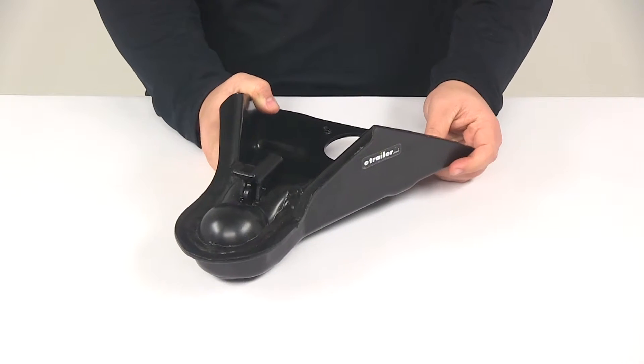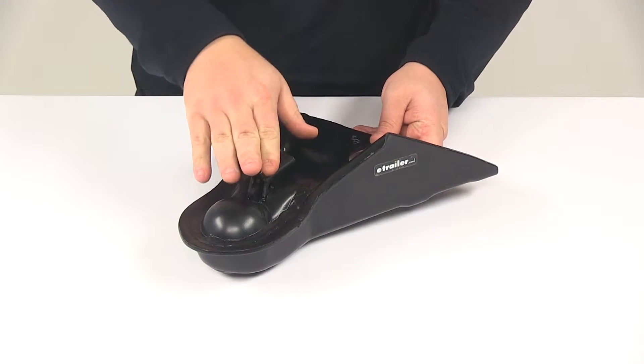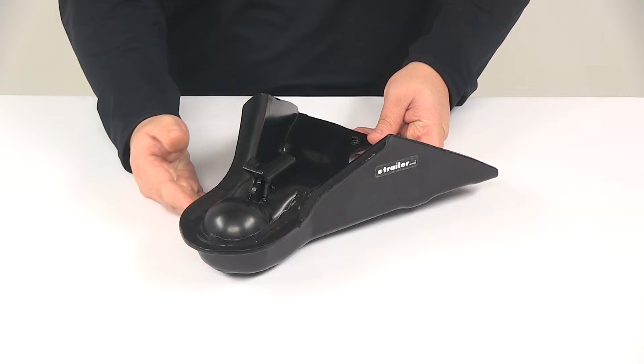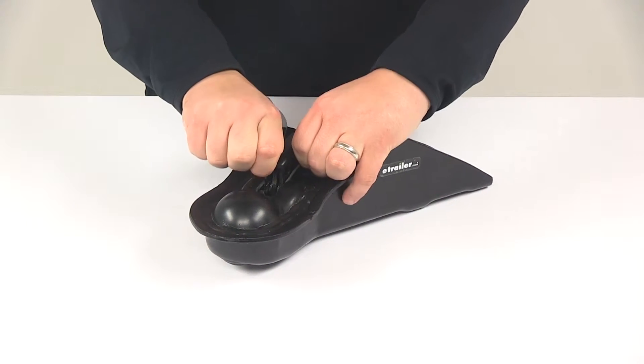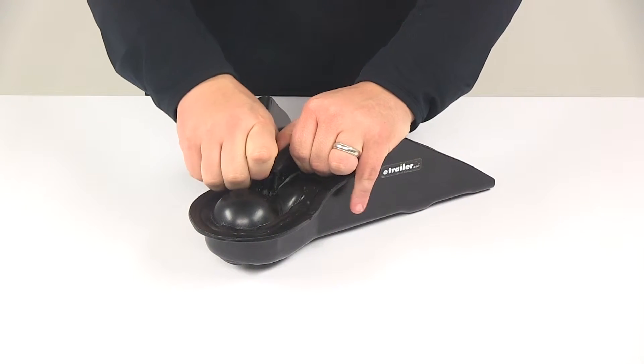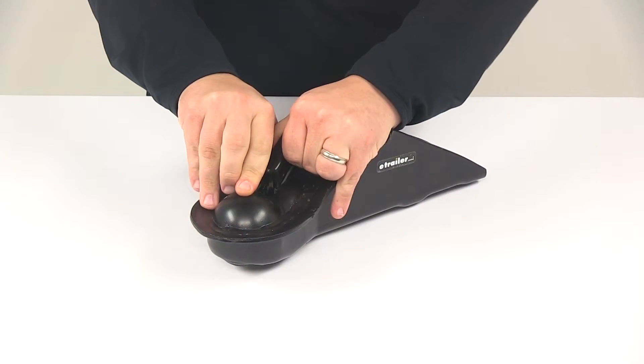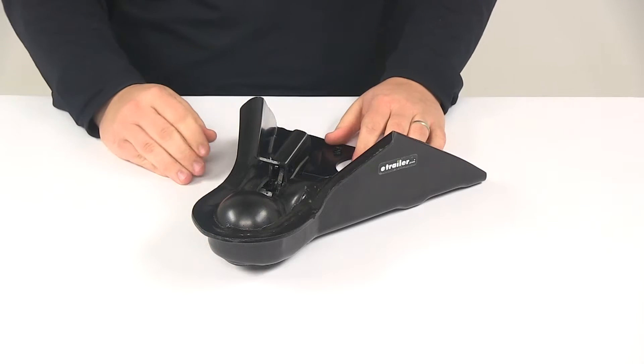It features a thumb latch mechanism that makes it very easy to secure the hitch ball inside the socket area of the coupler. To open it, you push the latch down and then pull the unit back. It will remain in the open position.